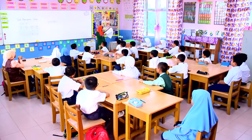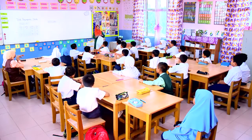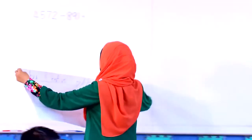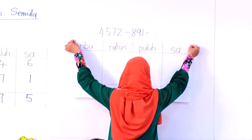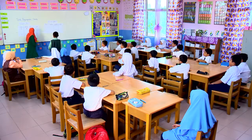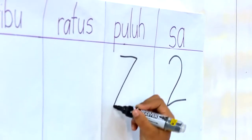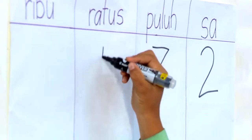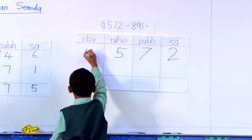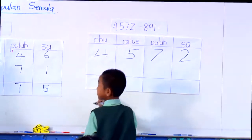Saya akan paparkan jadual nilai tempat ini untuk kamu jawab. Kamu gunakan pen markah warna hitam untuk kamu salin nombor yang asal. Dan apabila kamu pinjam, kamu gunakan markah pen merah. Dan jawapan yang kamu ada melibatkan penolakan, gunakan warna biru. Dan nombor yang asal guna warna merah.